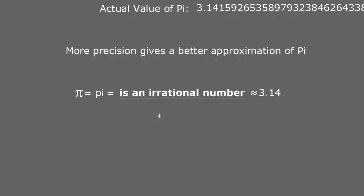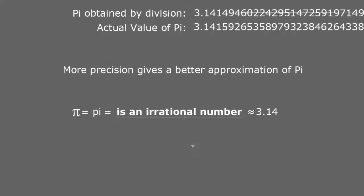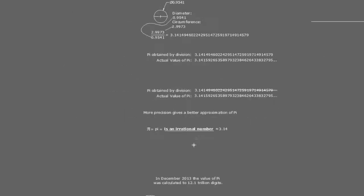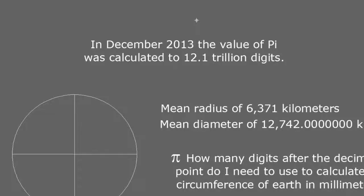Pi is an irrational number. No matter how big a circle you make and no matter how precise your measuring instrument, you will never find an exact value for pi — you will never find a finite number of digits after the decimal point, and those digits follow no predictable pattern. This confirms that pi is an irrational number. In fact, pi has been calculated up to 12.1 trillion digits after the decimal point.